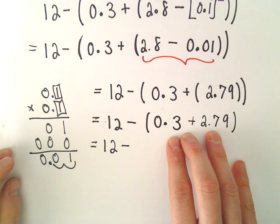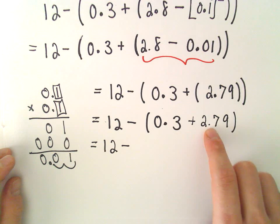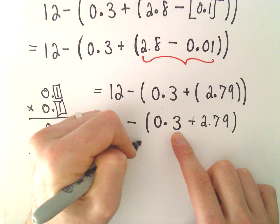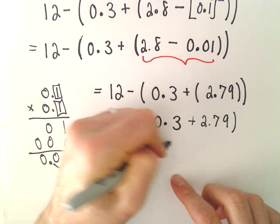I've got 12 minus - I'm going to do the arithmetic. Again, if you have $2.79 and somebody gives you 30 cents, you would have $3.09.